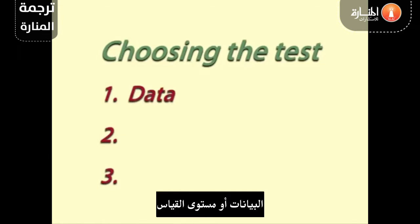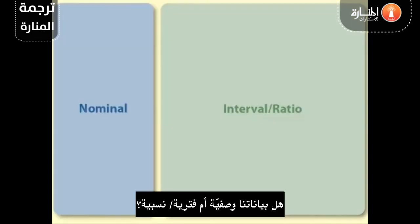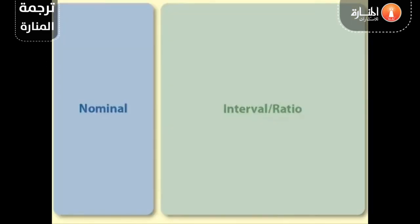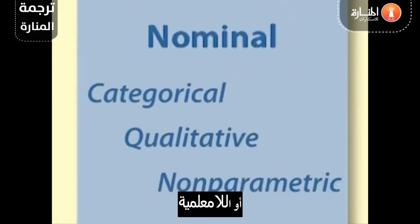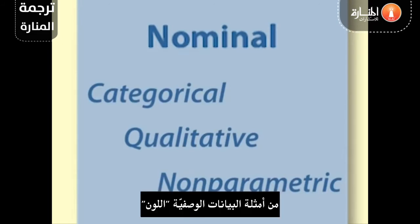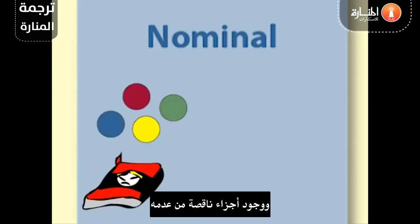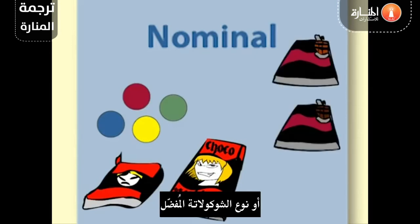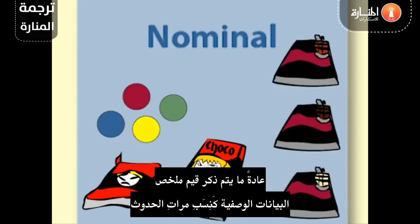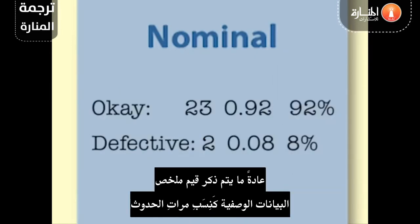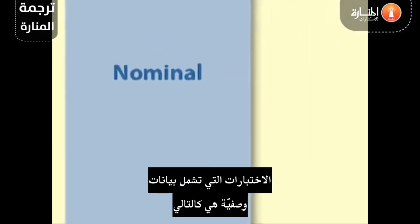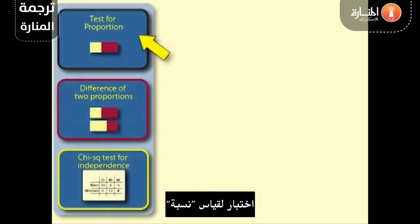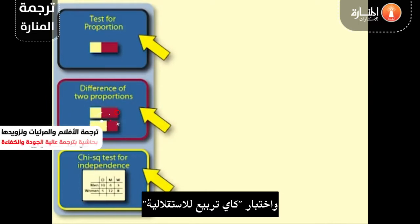1. Data or level of measurement. Is our data nominal or interval ratio? Nominal data is also called categorical, qualitative or nonparametric. Examples of nominal data are colour, whether parts are defective or not, or preferred type of chocolate. Nominal summary values are usually stated as frequencies, proportions or percentages. The tests that involve nominal data are test for a proportion, difference of two proportions and chi-squared test for independence.